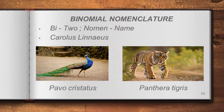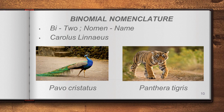The first method is binomial nomenclature. 'Bi' means two and 'nomen' means name, so binomial nomenclature means each organism or species must have two names: a genus name and a species name. The genus name must begin with a capital letter and the species name with a small letter. This method was introduced by Carlos Linnaeus. For example, the peacock's scientific name is Pavo cristatus, and the tiger's is Panthera tigris.